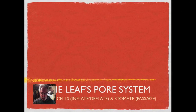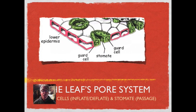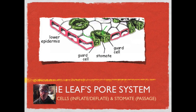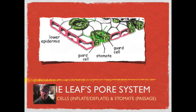Now let's take a look at the leaf pore system — the guard cells and the stomata. The guard cells are highly reactive to water being pumped into them. As water is pumped in, it causes the stomata to close down. For instance, on windy days the leaf doesn't want to lose a lot of water vapor, so the guard cells swell and shut the stomata. On nice days when conditions are favorable, water vapor, oxygen, and CO2 can move freely in and out.